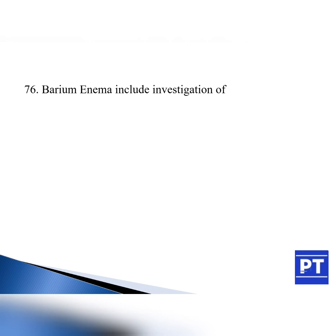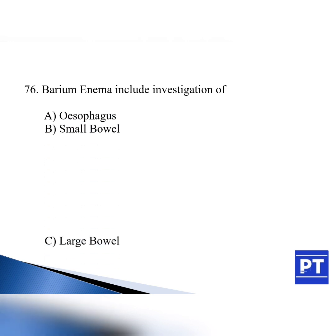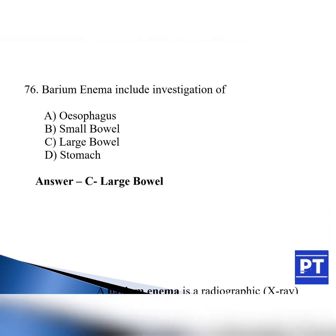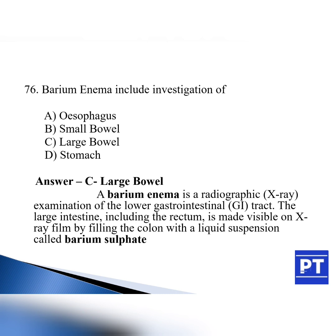Question number 76: Barium enema is an investigation of — option A: esophagus, option B: small bowel, option C: large bowel, option D: stomach. The answer is option C, large bowel. A barium enema is the radiographic X-ray examination of the lower gastrointestinal (GI) tract. The large intestine including the rectum is made visible on X-ray film by filling the colon with a liquid suspension called barium sulfate. Barium sulfate is the contrast medium used for the GI tract. Other investigations include barium swallow for esophagus, barium meal for stomach, barium meal follow-through for small intestine, and barium enema for large intestine or large bowel.